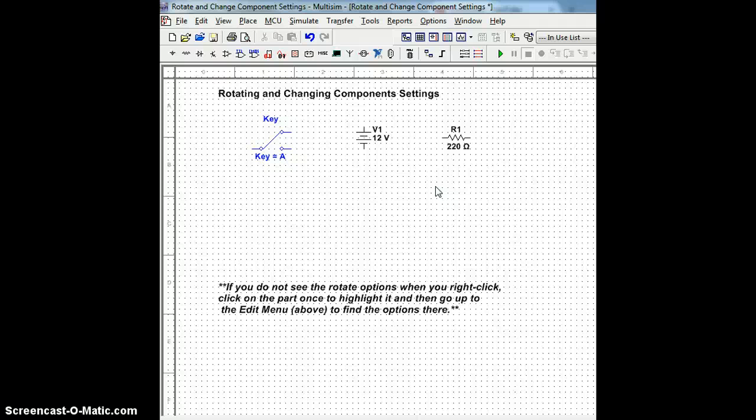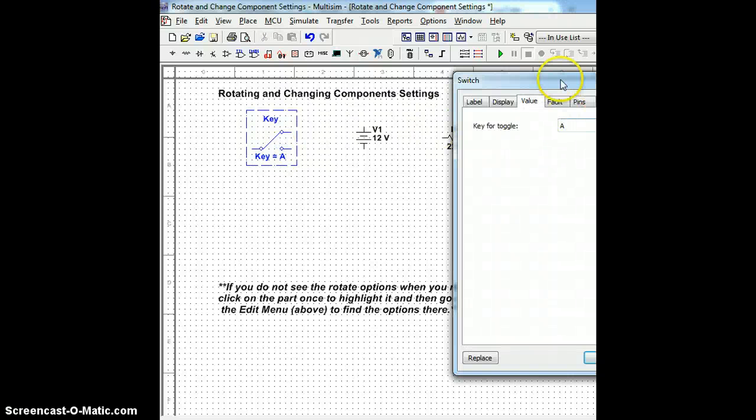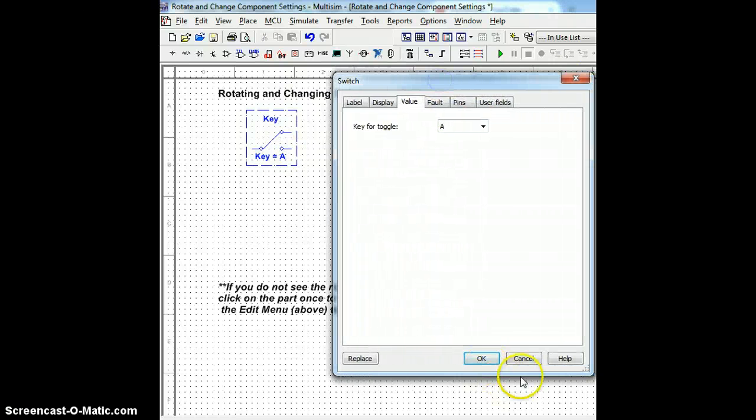Any additional questions about rotating and or changing settings on any parts, please ask. Additionally, one last point I can add on to correcting values in your parts is if you cannot right-click or have trouble right-clicking and finding the properties option, you can always double-click on your part and get the same menus that you saw before. Other than that, any questions, please follow through. Thank you for your time.